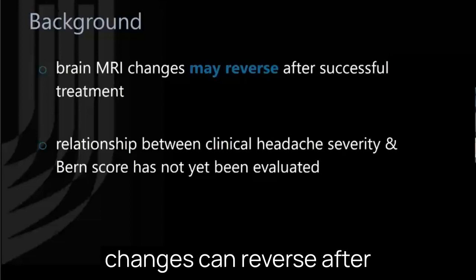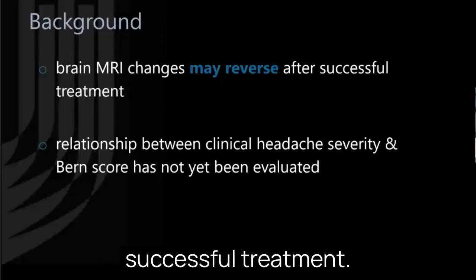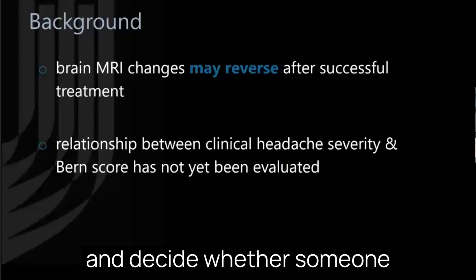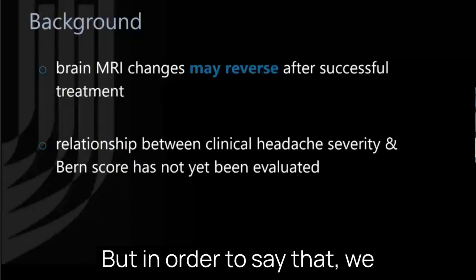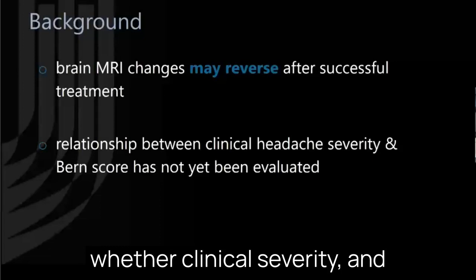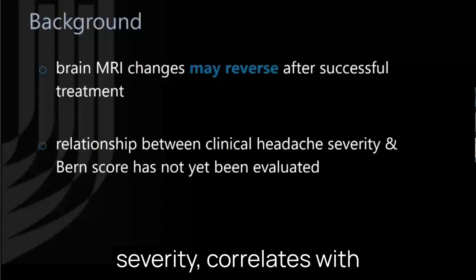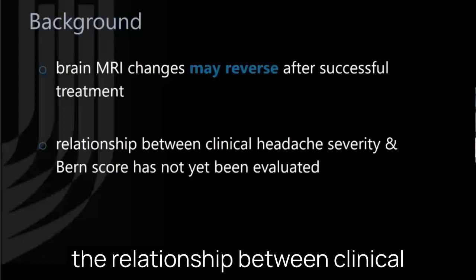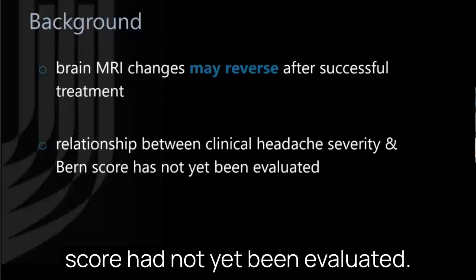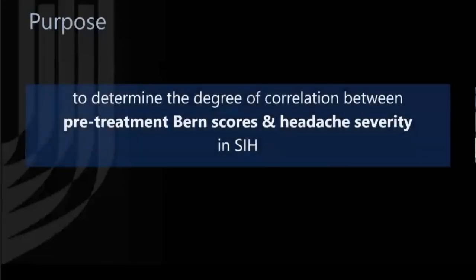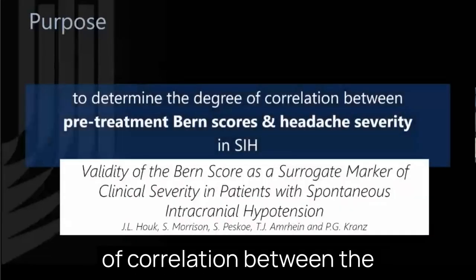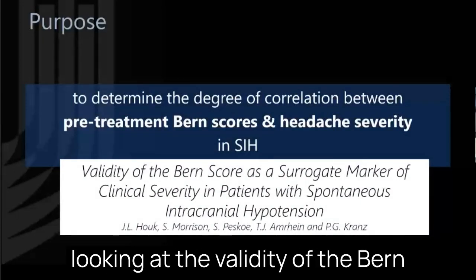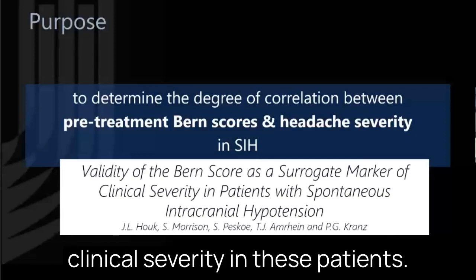We know that brain MRI changes can reverse after successful treatment. This raises the question: can the Burn Score be used to assess success after treatment — can we look at the brain MRI and decide whether someone has been successfully treated? In order to say that, we would need to determine whether clinical severity, typically headache severity, correlates with these changes on brain MRI. At the time of this paper, the relationship between clinical headache severity and the Burn Score had not yet been evaluated. The purpose of our paper was to determine the degree of correlation between pretreatment Burn Scores and headache severity in SIH.